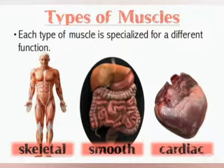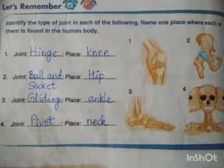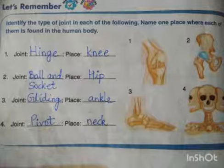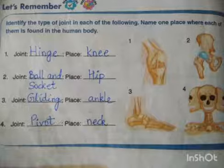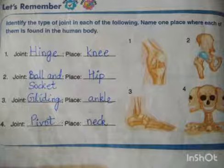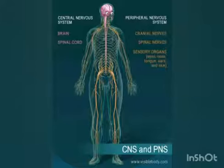So the three types of muscles are skeletal muscles, cardiac muscles, and smooth muscles. Now let's look at page number 88. Let's fill in: identify the type of joint in each of the following. The first is a hinge joint found in the knee, second is a ball and socket joint found in the hip, third is a gliding joint found in the ankle, and fourth is a pivot joint found in the neck.